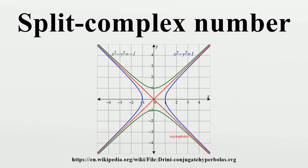and the quantity j satisfies j²=1. Choosing j²=-1 results in the complex numbers. It is this sign change which distinguishes the split complex numbers from the ordinary complex ones.